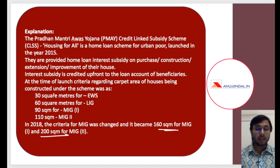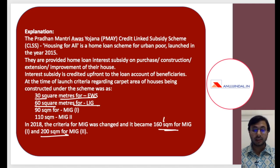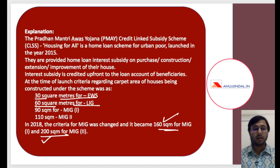The other conditions are: 30 square meters for economically weaker sections, 60 square meters for LIG or low income group, and 160 square meters and 200 square meters for MIG 1 and MIG 2 respectively. We will have some more questions on Pradhan Mantri Awas Yojana as well.